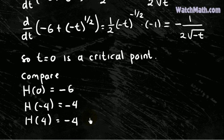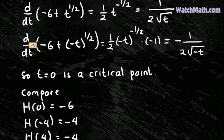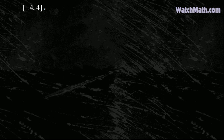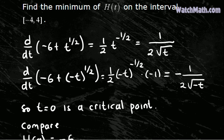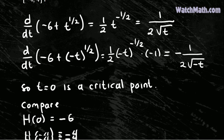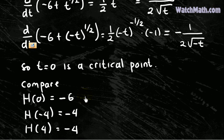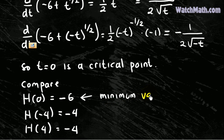What we are looking for is the minimum of h of t. The minimum occurs when t equals 0, and the minimum value is equal to negative 6.